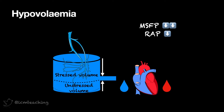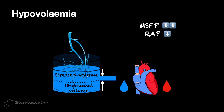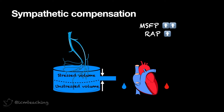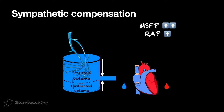Now let's have a look at what happens if we lose blood from the tank — in other words, if we become hypovolemic. Stressed volume falls, which means mean systemic filling pressure falls, venous return reduces, and cardiac output also falls. If this happens, our sympathetic nervous system is activated. Our splanchnic veins are heavily innervated with alpha receptors, which means they constrict very easily. This is like the walls of the tank constricting, converting unstressed volume to stressed volume. So even though there is less blood in the system, the pressure gradient for venous return is maintained, and cardiac output and blood pressure are relatively preserved.